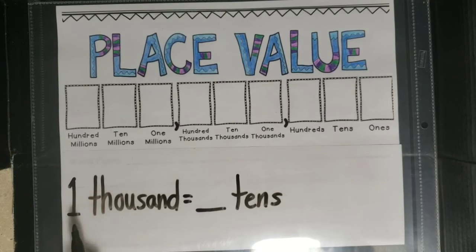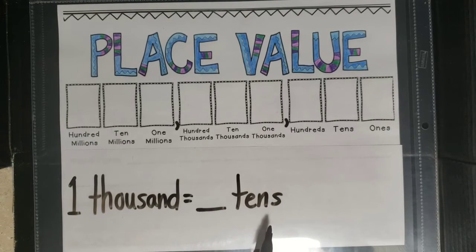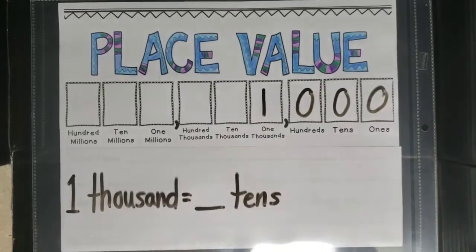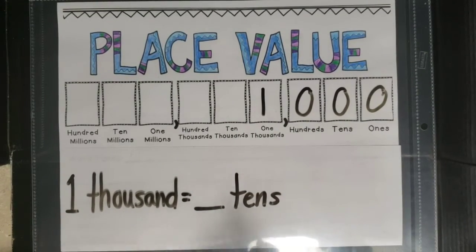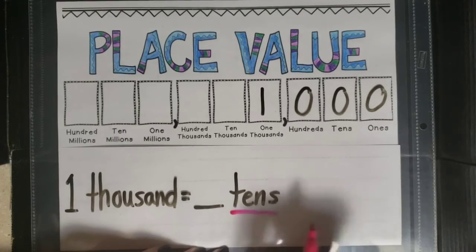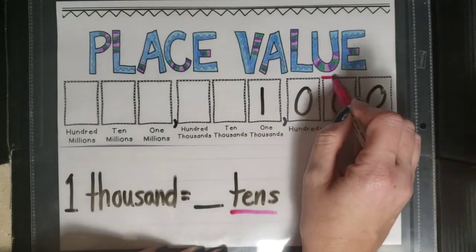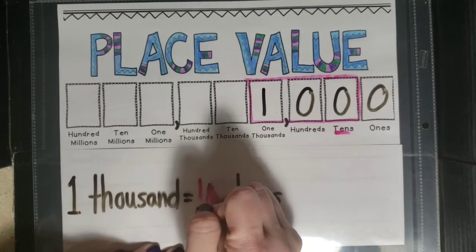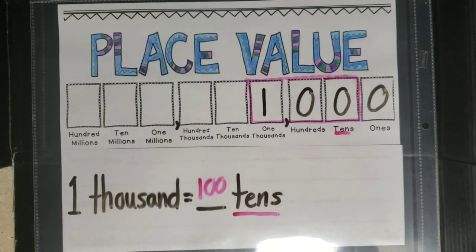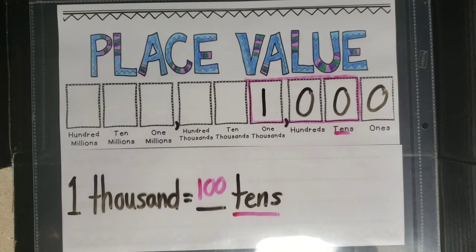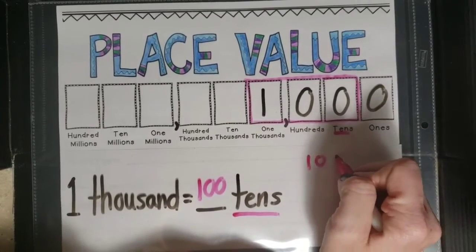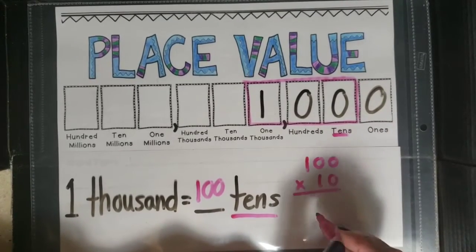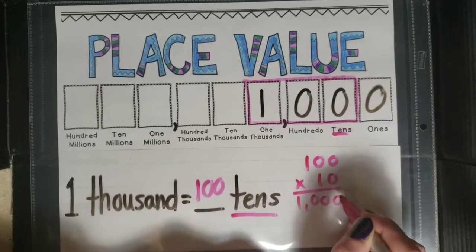Next we are converting one thousand to an unknown number of tens. So again write one thousand on the chart. We are converting to tens, so draw the box around the tens and extend all the way across. One thousand equals one hundred tens. We can check: one hundred times ten equals one thousand.